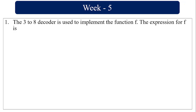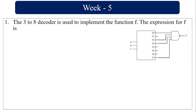So the 3-to-8 decoder is implemented. The expression for f is: here they have given a 3-to-8 decoder, and the output is going to be in inverted mode. So the inverted output is connected to your NAND gate. The value is going to be your minterm, so I can write the minterm as 0, 2, 3, and 7. So your f is equal to summation m of 0, 2, 3, 7.